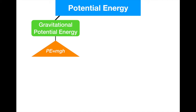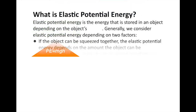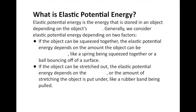In our next section, we're going to talk about the other type of potential energy, which is elastic potential energy. Elastic potential energy is the energy that's stored in an object depending on the object's shape — not talking about shape as in a square or a circle, but rather how it's being pulled or pushed together by forces.